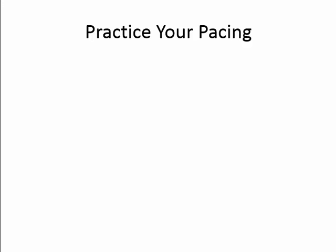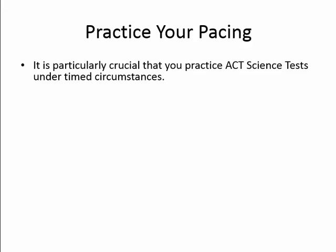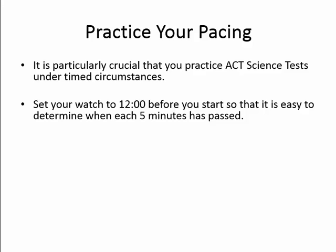Because proper pacing is so critical to success on the ACT science section, it is so important that you practice taking timed tests when you're ready for it. I've seen so many students think they have the ACT science section completely mastered because they take all the time in the world to answer the questions, and then they collapse on the actual test in a fit of panic because they have completely run out of time. So do time practice. A handy trick, both in practice and on the real deal, is to set your watch to 12 on the dot before you start. It will be way easier to tell when five minutes have passed than if you start the section at 10:47 AM and have to do the math to count your five-minute intervals.